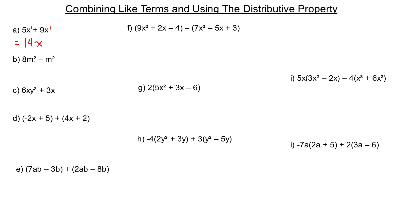In B, we have 8m squared minus m squared. They're the same kind of term — the exponent is the same in both. If you don't see a number in front, it's automatically a 1 there. So it's 8m squared take away 1m squared, which leaves us with 7m squared.